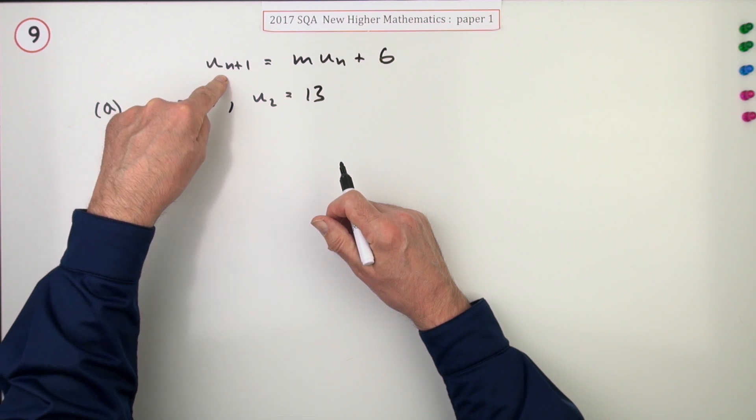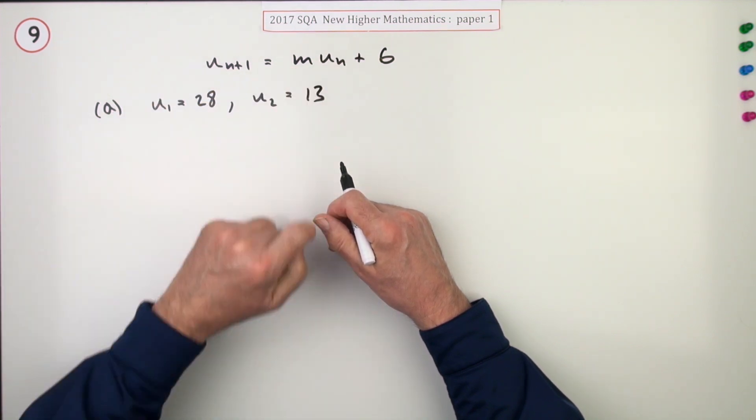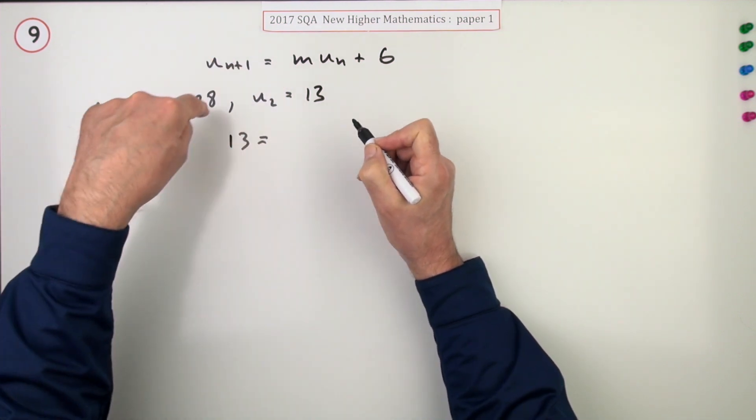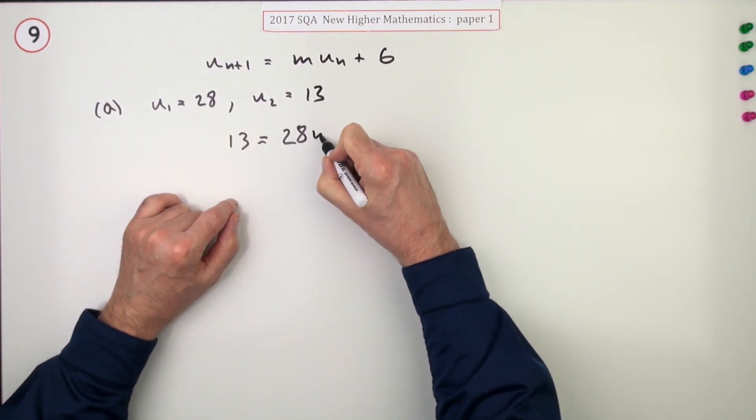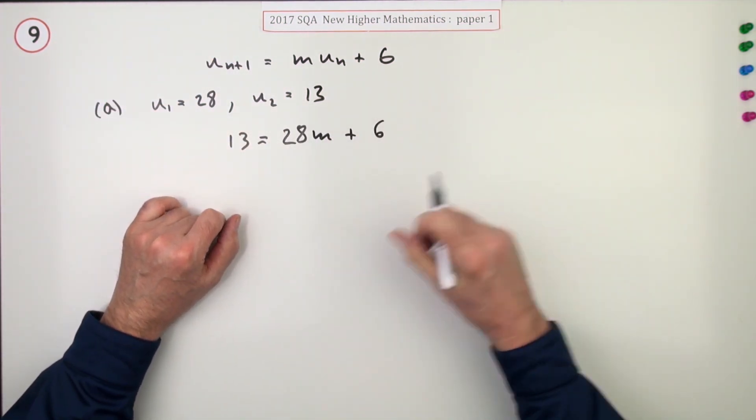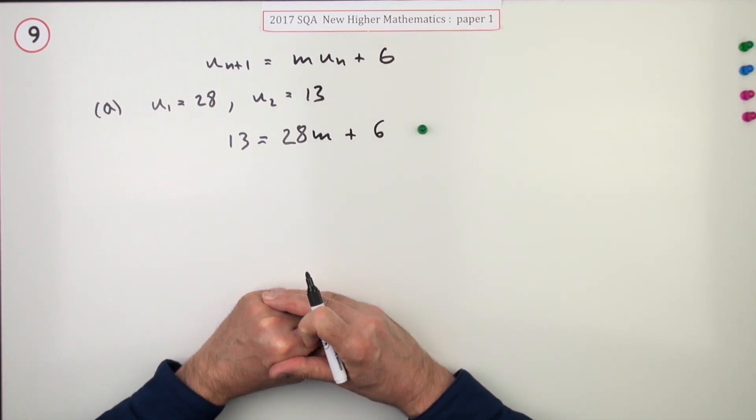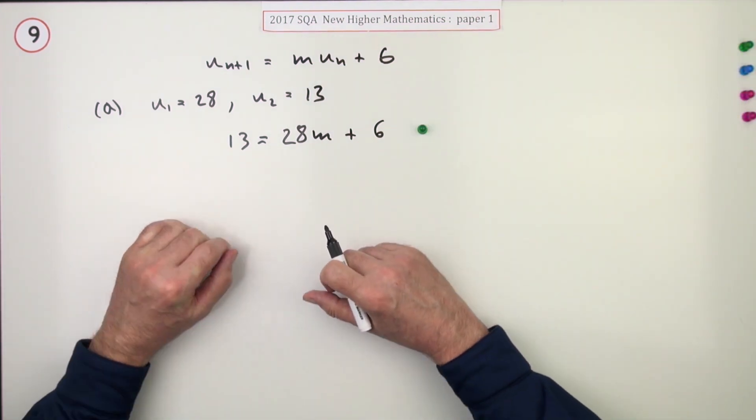The following term is m times the previous term. The following term, that's u2. 13 is m times the previous one, so 28m plus 6. That stated explicitly gets the first mark. And then rearrange it.